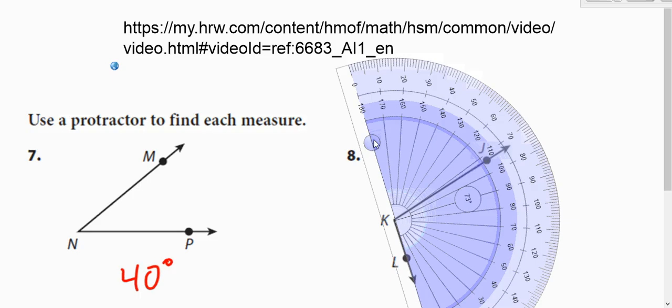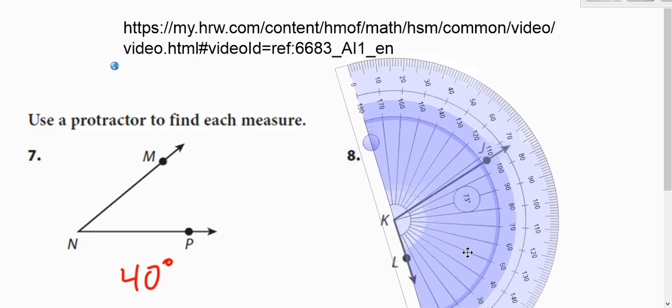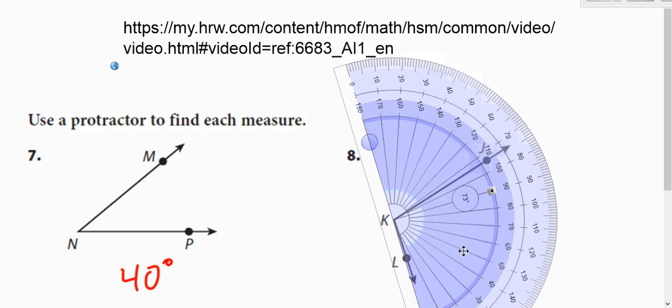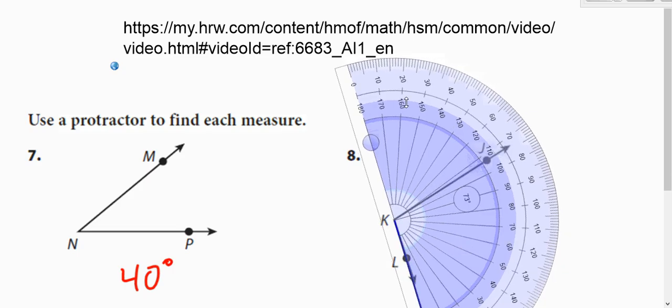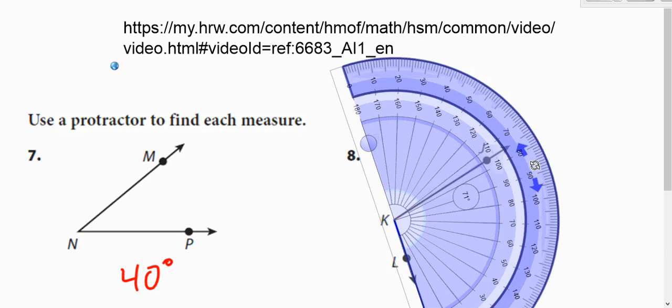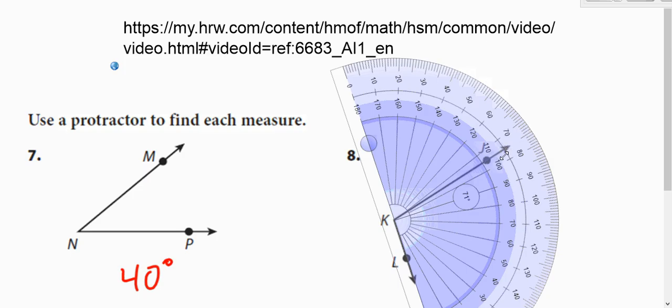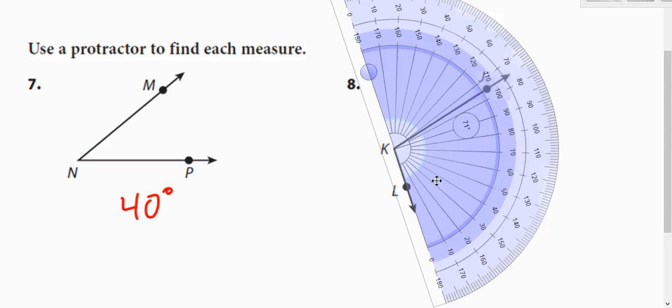Same thing with this other angle, but this time we need to rotate our protractor around a little bit so that we line it up with one of the sides. And you can see that's pointing a little bit off. So it looks like it's pointing right here to either 105 or 75. Looking at that, that is more than a 90 degree angle. You can also see that the first side is pointing to zero on the inside, so we're using the inside numbers. So that's at 105 degrees.